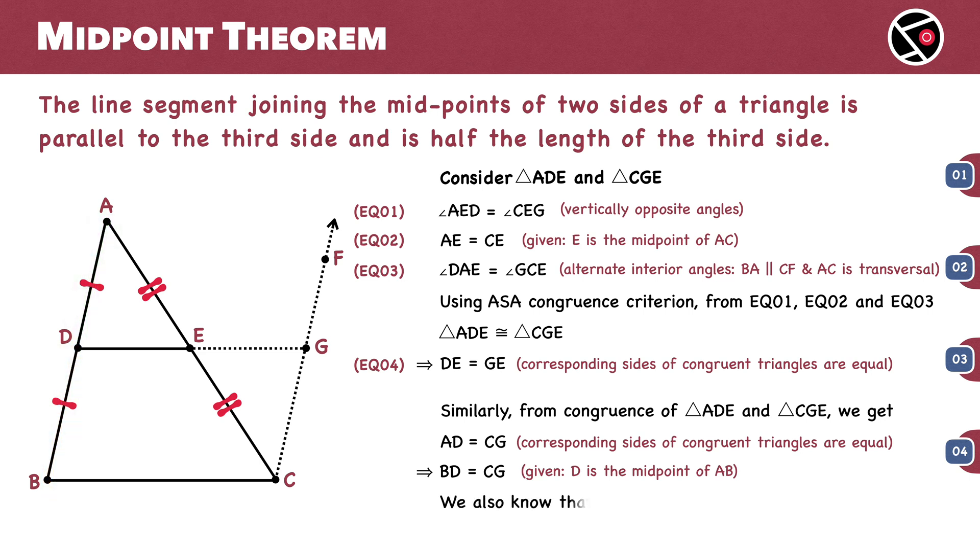Since BD is parallel to CG by construction, as CF is parallel to BA, we have a quadrilateral DBCG with one pair of opposite sides BD and CG that are equal and parallel. This makes DBCG a parallelogram.